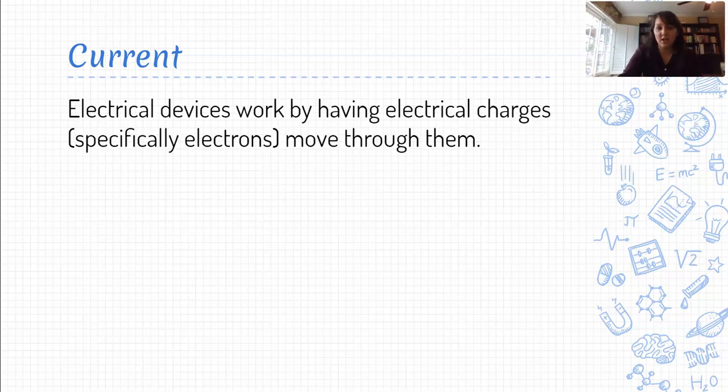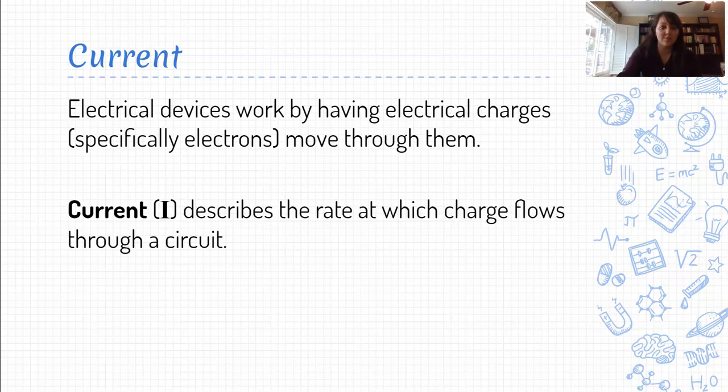So we'll go ahead and start with just the basic idea of current. So just to be clear, when we're talking about a circuit functioning, what's really going on in that electrical device to make it work is that there have to be charged particles moving through the circuit. It is the act of electrons moving through the filament of a light bulb that allows it to light up. It's the act of electrons moving through the circuitry in your phone or in your calculator or any other electrical device that allows it to function. So it's really all about the movement of charged particles, specifically electrons, through circuits that allows them to function.